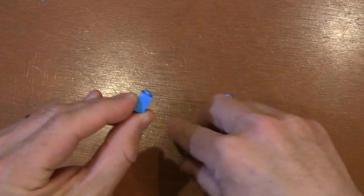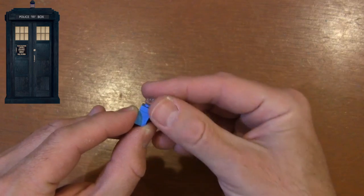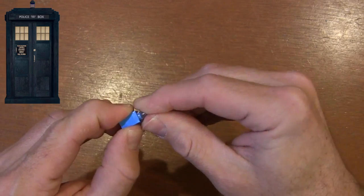And then on the top, we're going to get a 1x1 plate in translucent clear. And this is going to be like those windows that are up on top, near the top of the TARDIS.